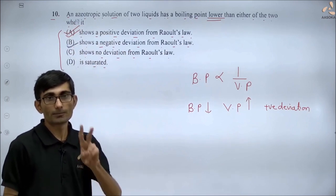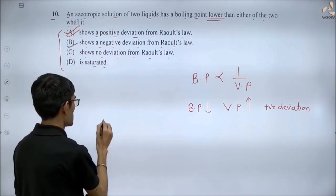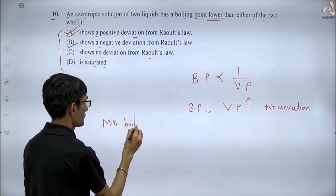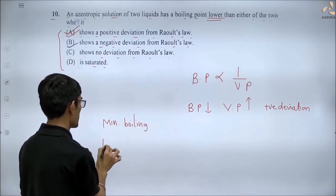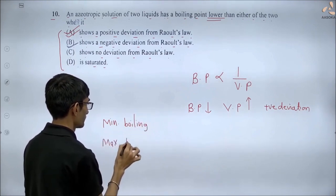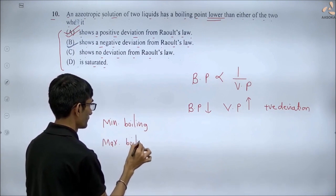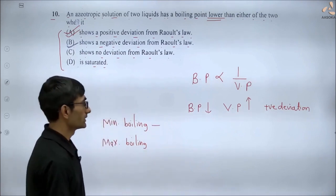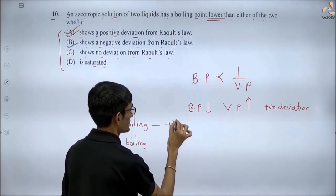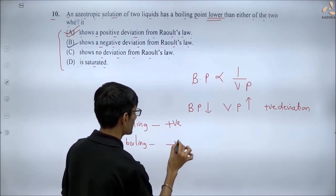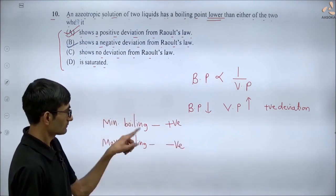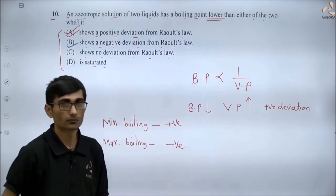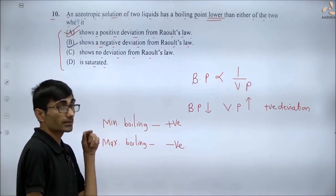एक और तरीका — हमने two types के azeotropes पढ़े थे: एक था minimum boiling azeotrope, और दूसरा था maximum boiling azeotrope. Minimum boiling azeotrope में होता था positive deviation, और maximum boiling में होता था negative deviation. इस तरीके से आप याद रख सकते हैं — minimum case में positive, maximum case में negative.